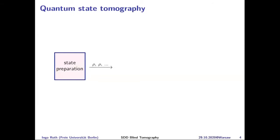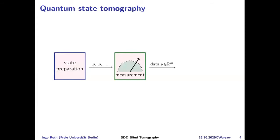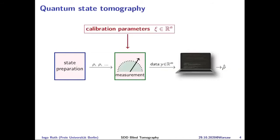In quantum state tomography, one wants to characterize the state preparation device, which spits out IID copies of a quantum state. This is fed into a measurement device, producing classical data — a vector of dimension m. That data goes into a classical computer, which outputs the state estimate. In practice, the measurement device depends on some calibration parameters, and your state estimate will depend on those calibration parameters.